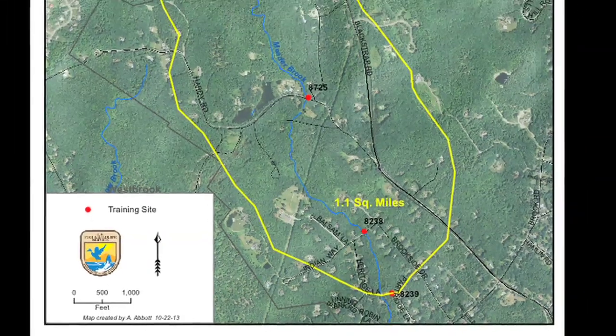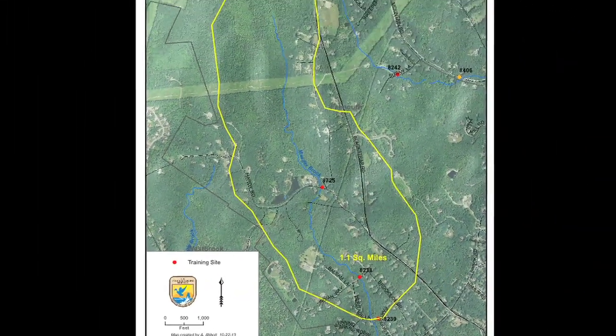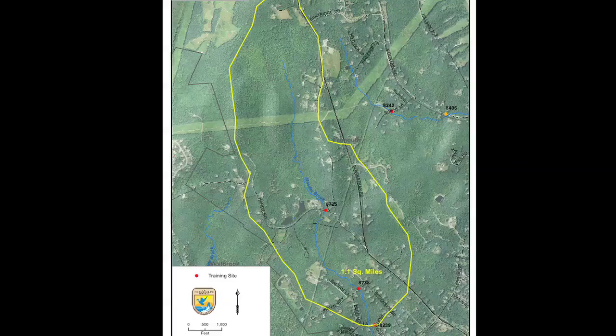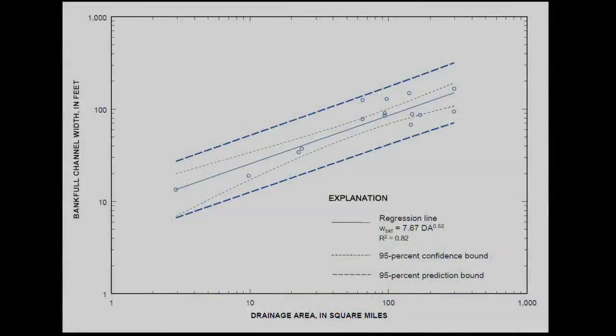If we have access to GIS we'd want to delineate the upstream watershed boundary, calculate an area — so at this site we're 1.1 square miles. We then want to look at regional hydraulic geometry curves that relate drainage area to bankfull widths and get a rough idea of potentially what size structure we're looking at. We can do that in the office. So if we're at 1.1 square miles and we look at the USGS regional hydraulic geometry curve, we might say we need a span of 9 or 10 feet.